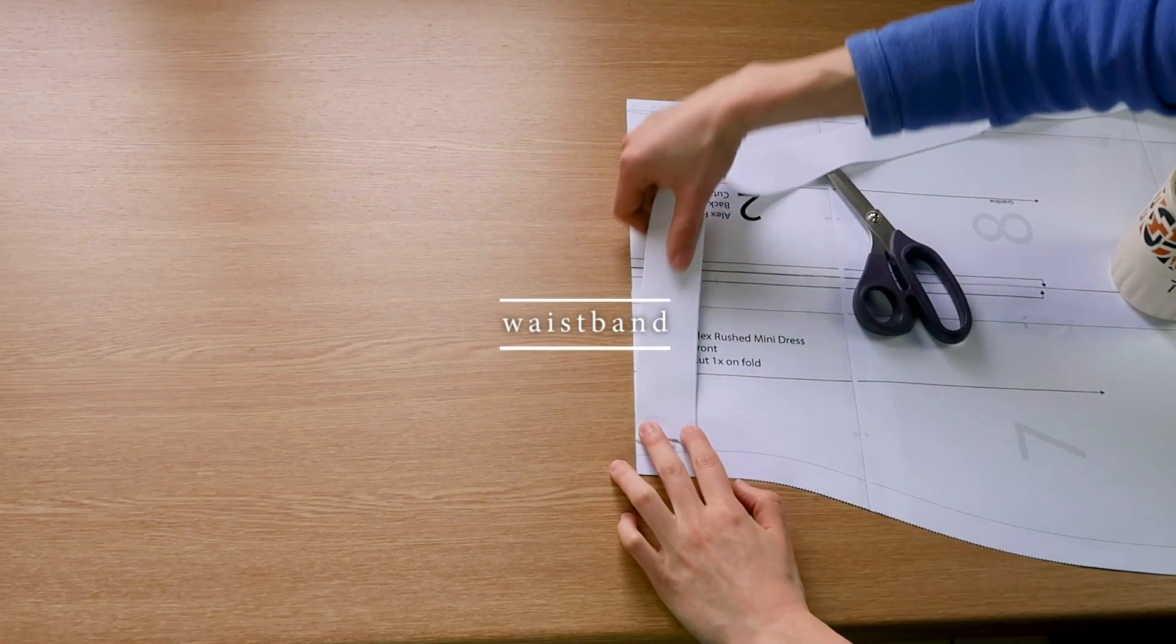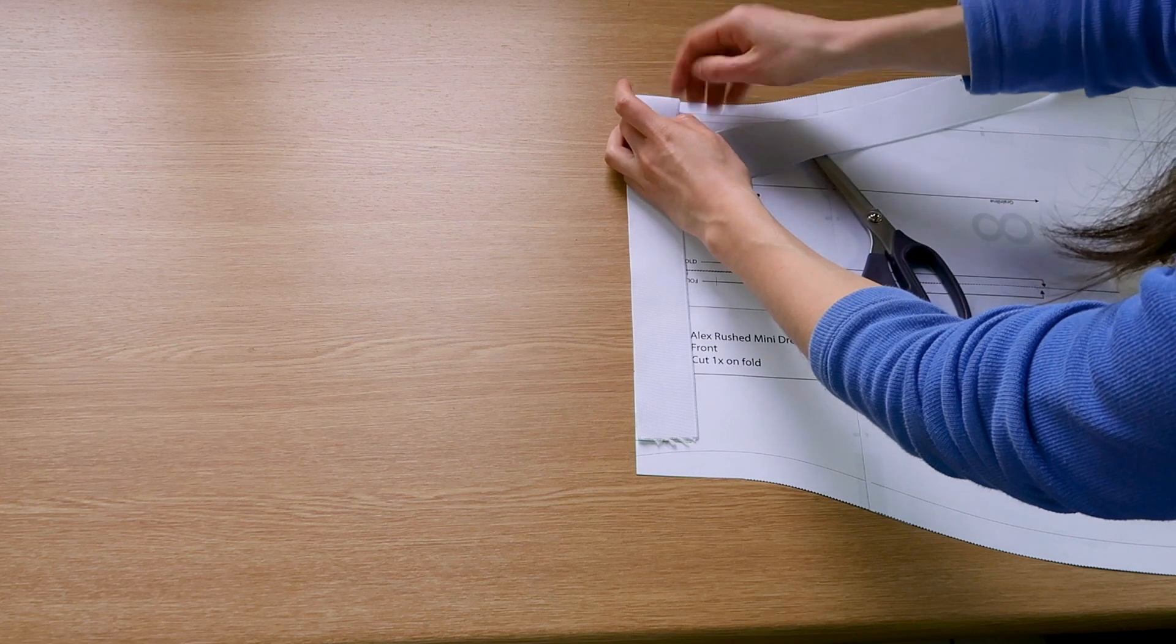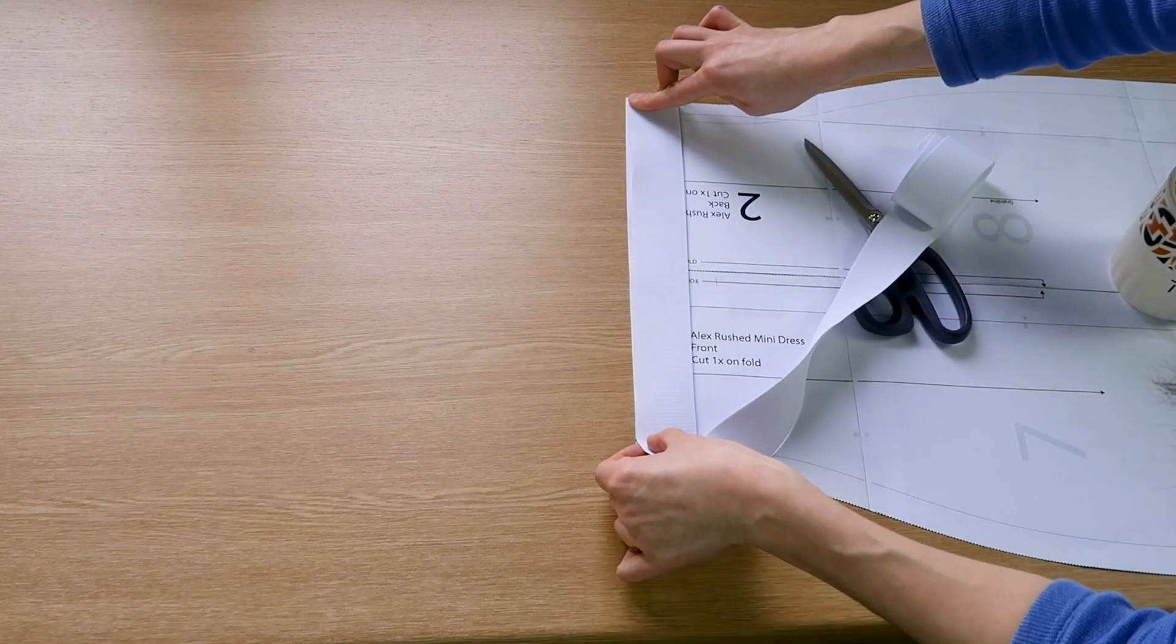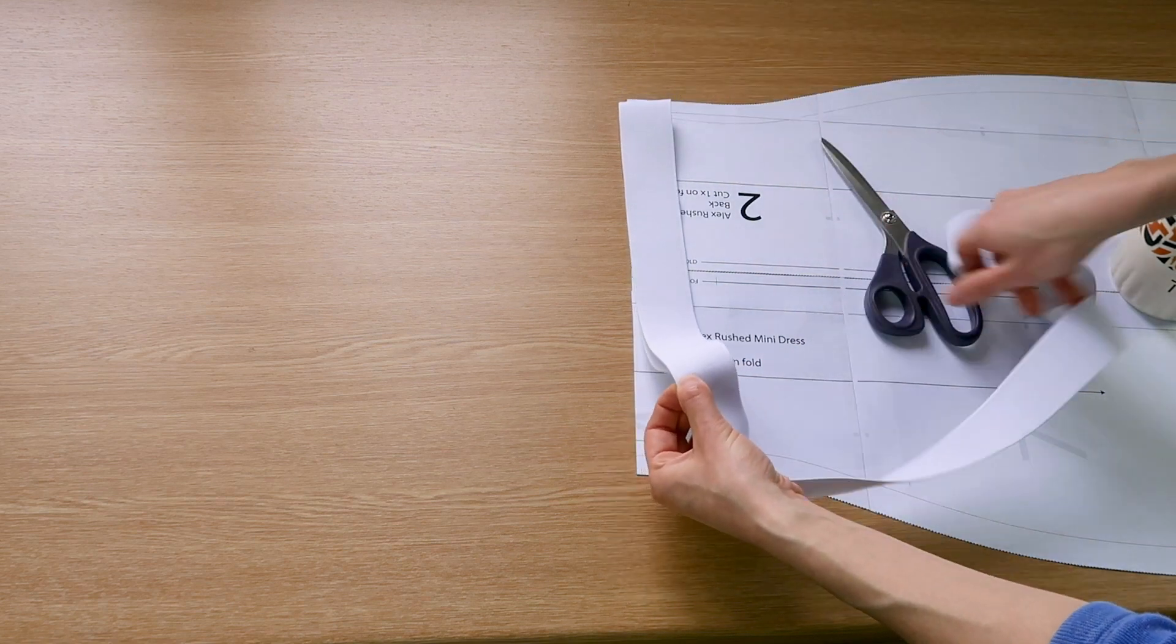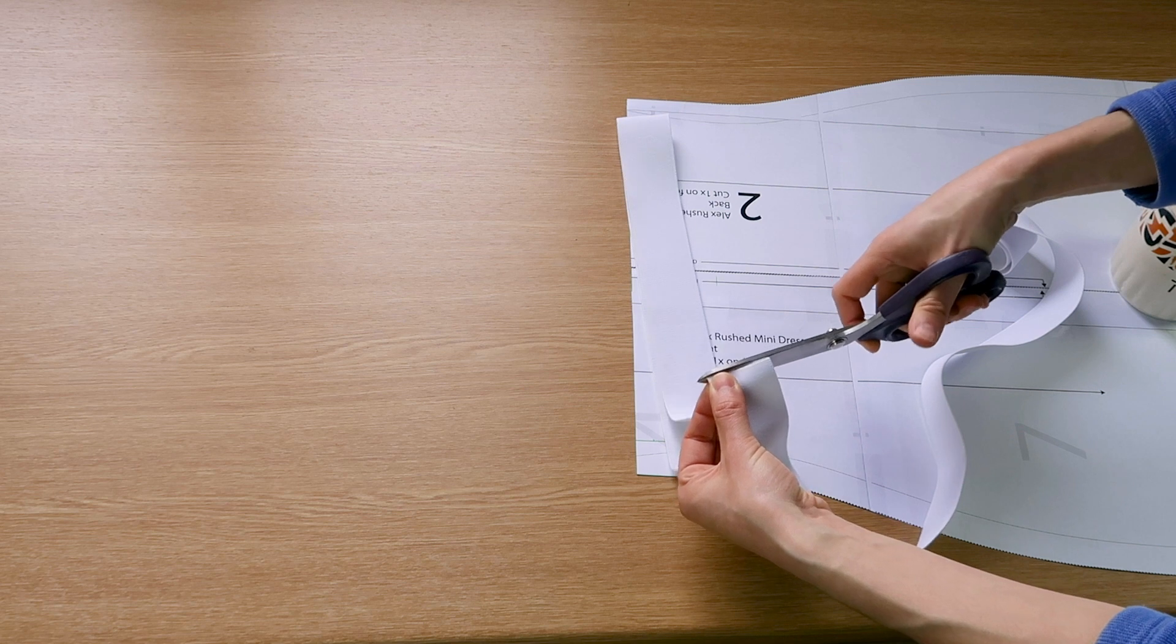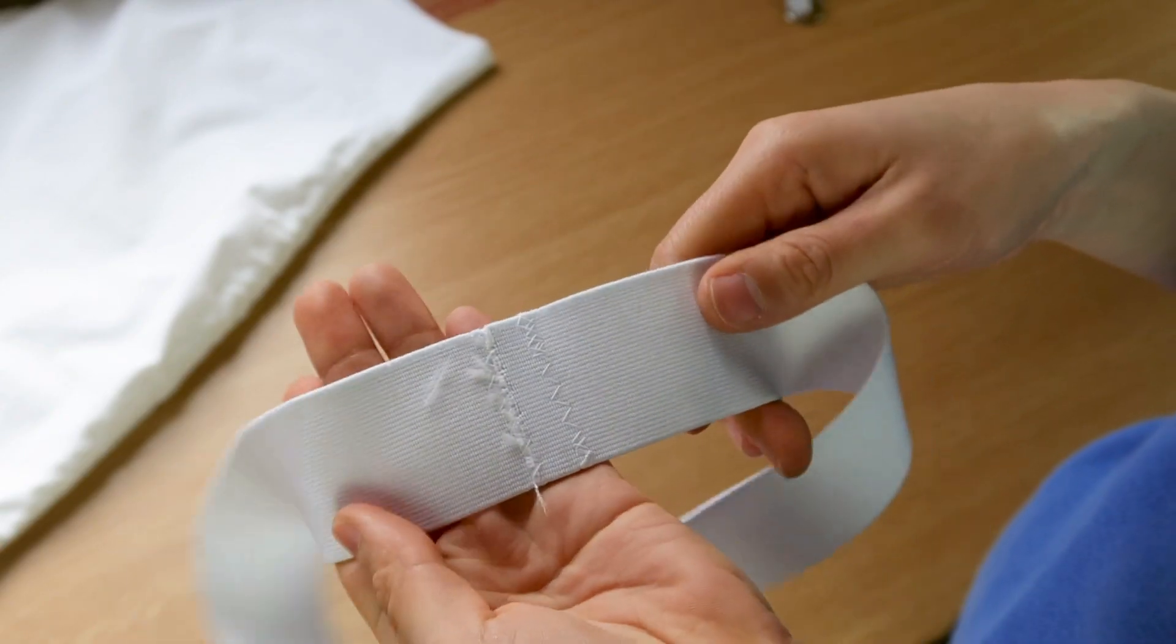Last step, I'm going to take my elastic band, so it's four centimeters wide. I lay it on the pattern to determine how long the piece should be. Remember that the pattern has two centimeters of seam allowances on each side and for your elastic band we only want one centimeter on each end. I'm going to sew the ends of my elastic together.